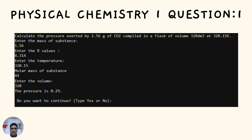We need to enter the mass of the substance, which is 1.56 grams. Enter the R value, which is 8.314. Enter the temperature, which is 320.15. Enter the molar mass of the substance — CO2 has a molar mass of 44. And lastly, enter the volume, which is 320. If you input all of them, it will result in a pressure of 0.29.